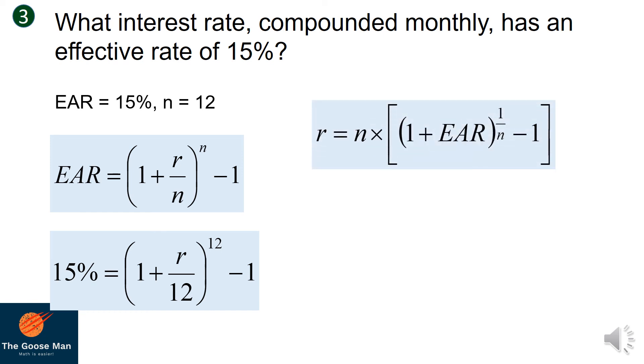Then we will substitute the given values again. We have r = 12 × ((1 + 15%)^(1/12) - 1).